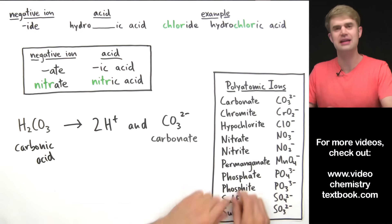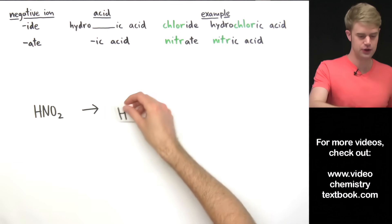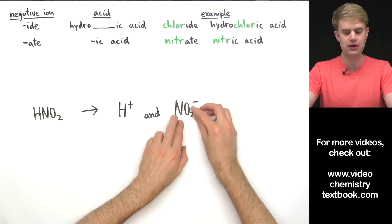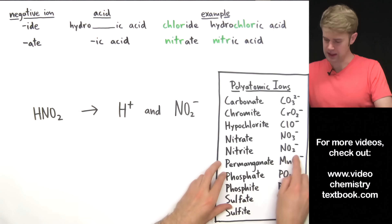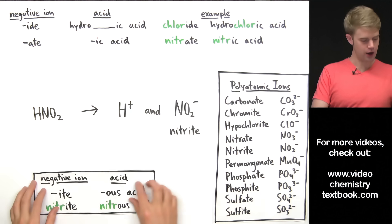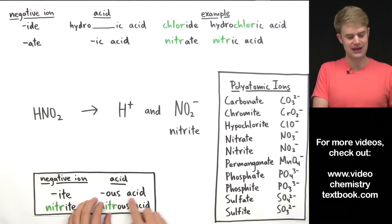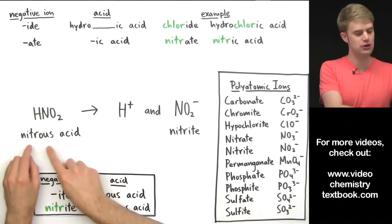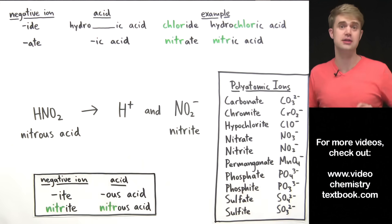Now the other type of polyatomic ion ends in -ite. Let's look at how we name acids containing these. Here we have HNO2, which we break apart into H+ and NO2- with a 1- charge. NO2 1- is called nitrite. The rule is: if it ends in -ite, remove the -ite and add -ous acid. So we go from nitrite to nitrous acid.